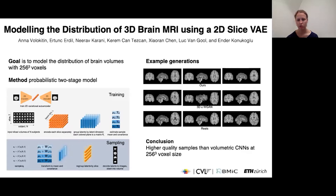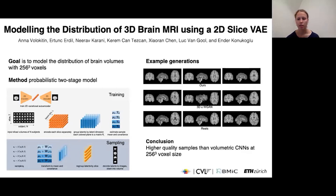Our results show that our method produces higher quality samples than volumetric CNN methods, as judged by several image metrics. We have also developed a novel segmentation-based evaluation metric and find that our method produces samples that behave more like real brain samples compared to samples from volumetric methods.